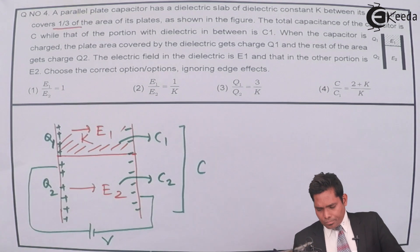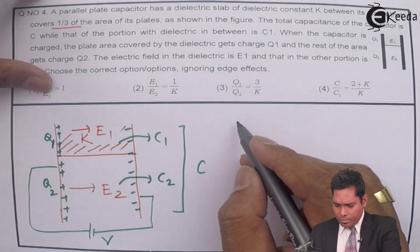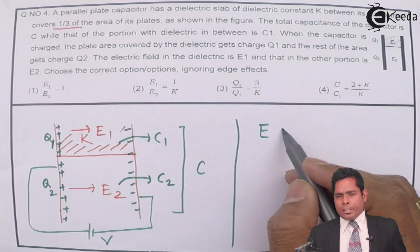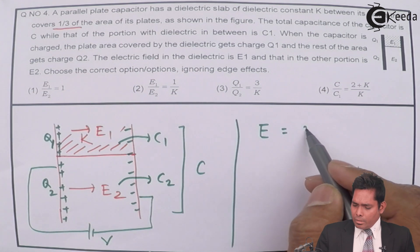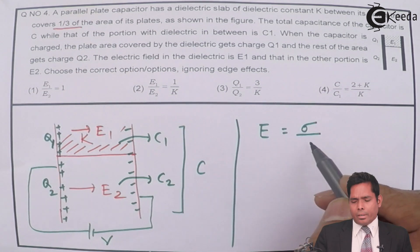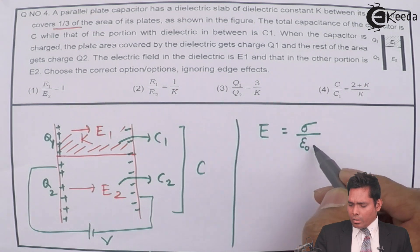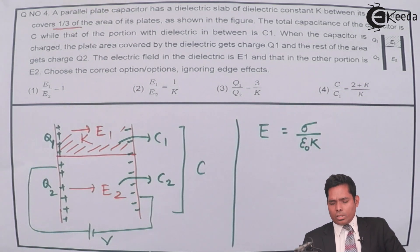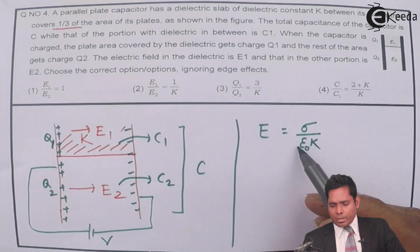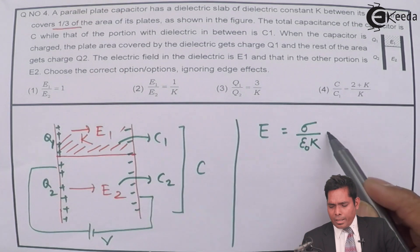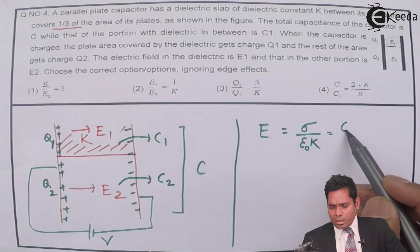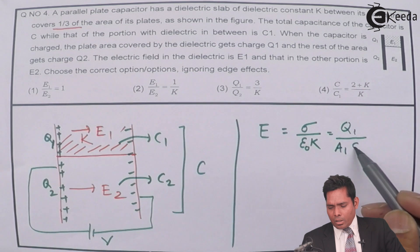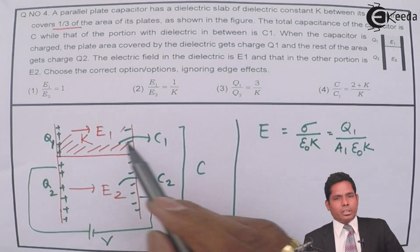Let us find the ratio of the electric fields. The formula for the electric field in a dielectric medium is E = σ / (ε₀K), where σ is the surface charge density. For E1 in the dielectric region, σ = Q1/A1, so E1 = Q1 / (A1 · ε₀ · K). Here K is the dielectric constant.